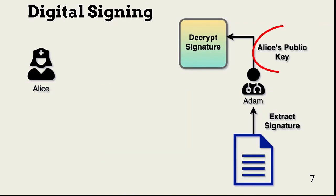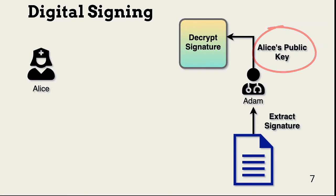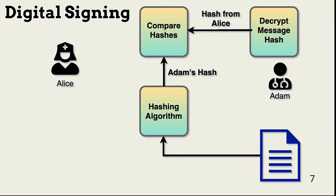Adam uses Alice's public key to decrypt the signature and access the message digest. Adam then recalculates the message digest and compares it to the value created by Alice. If Alice's decrypted hash value matches Adam's hash of the message, Adam knows Alice sent the message — Alice's public key successfully decrypted the hash, and it has not been altered after signing.